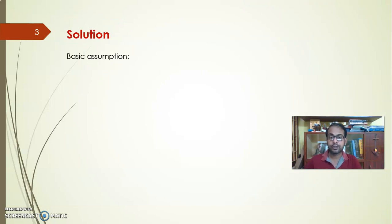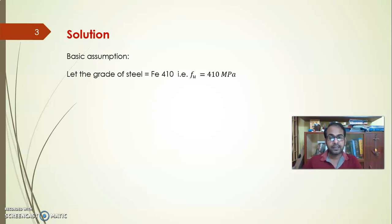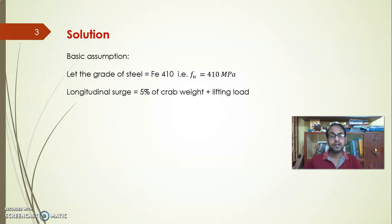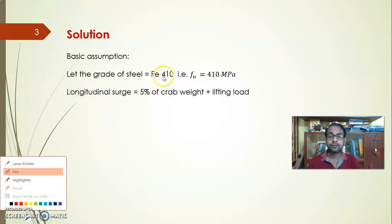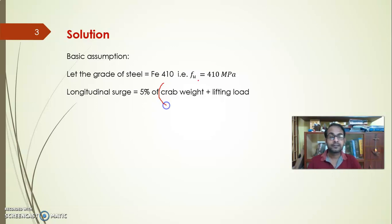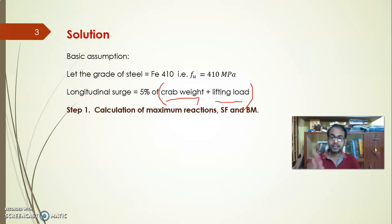In the solution, we first assume some basic data: the grade of steel is 410. We also assume 5 percent longitudinal surge, which may arise due to the lateral movement of the crab unit and the longitudinal movement of the crane unit. This is taken as 5 percent of (crab weight + lifting load).